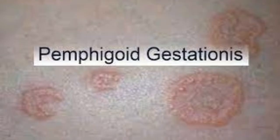Very pruritic papules and urticarial plaques, which evolve to form vesicles and bullae, develop initially in a periumbilical distribution with spread to the rest of the trunk and extremities.